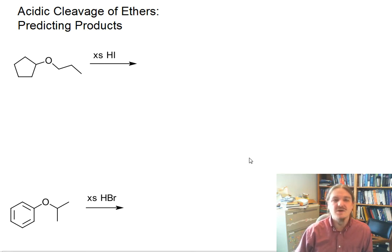And here I've got two different ethers that we can talk about. Start first, the cyclohexylpropyl ether or propoxycyclohexane reacting with excess hydrogen iodide.